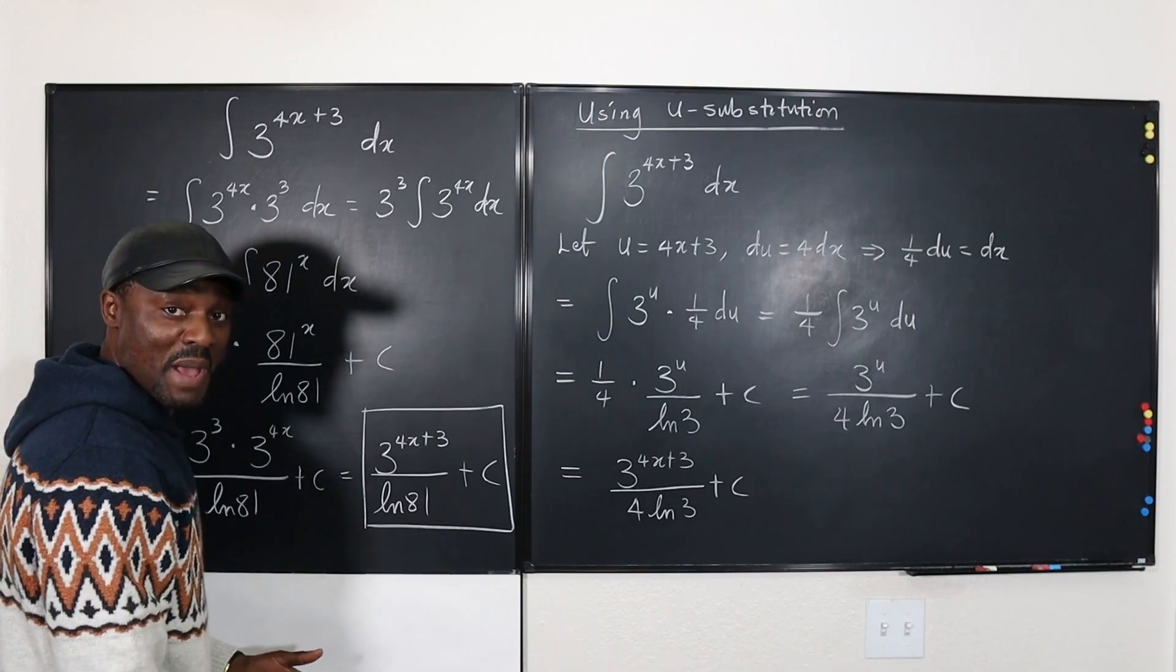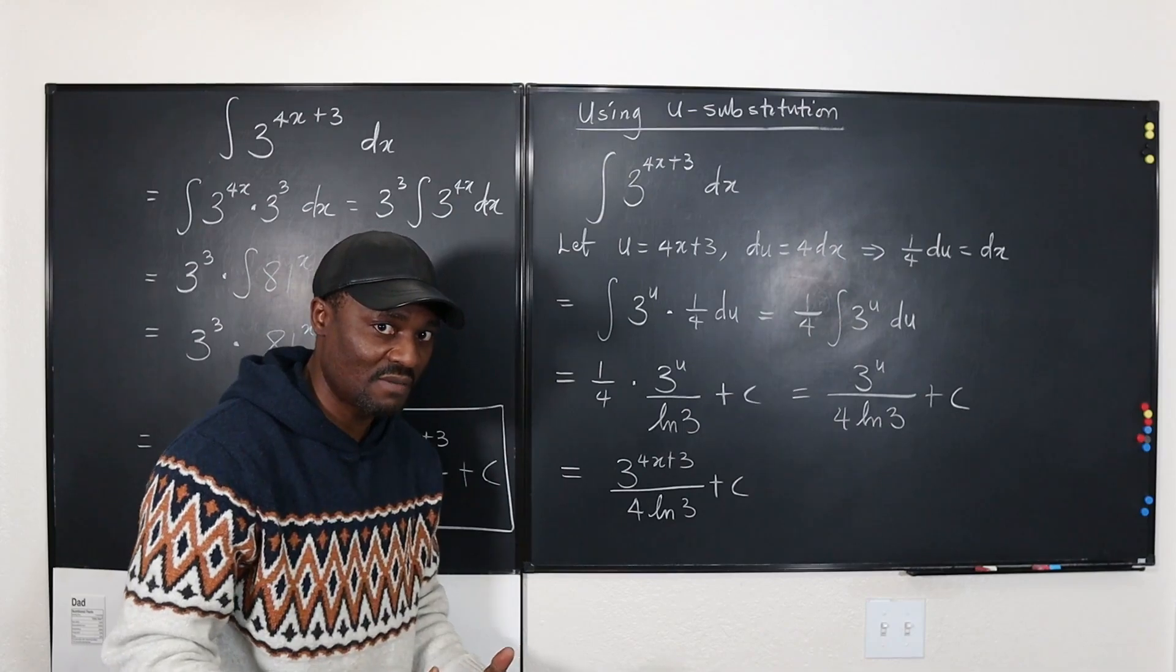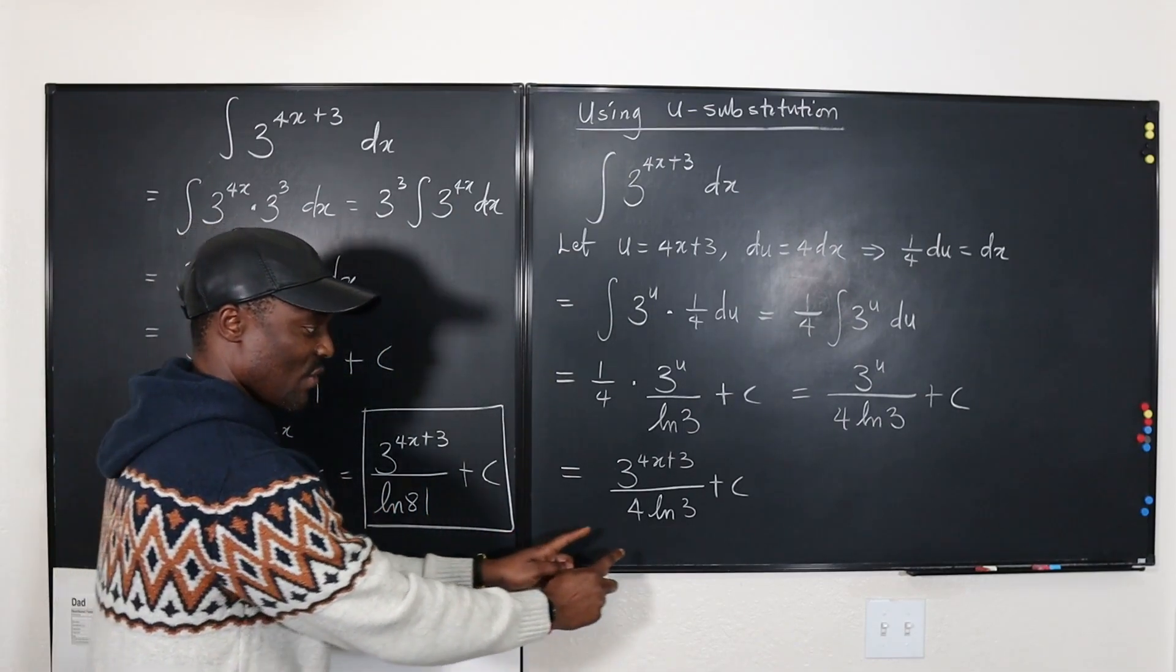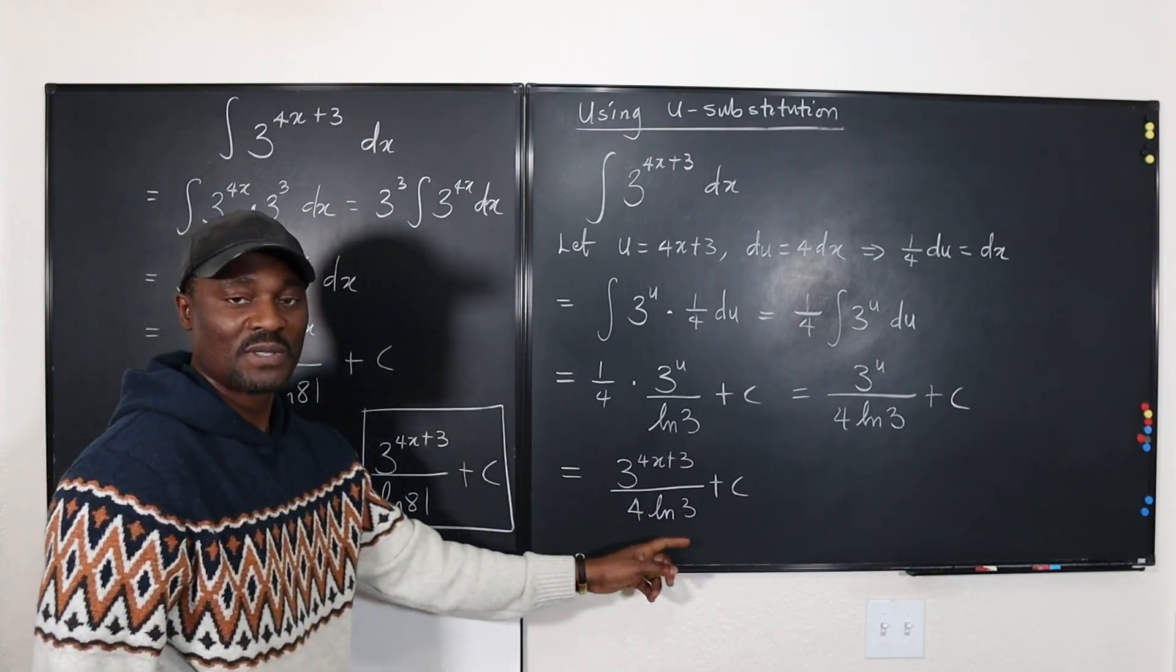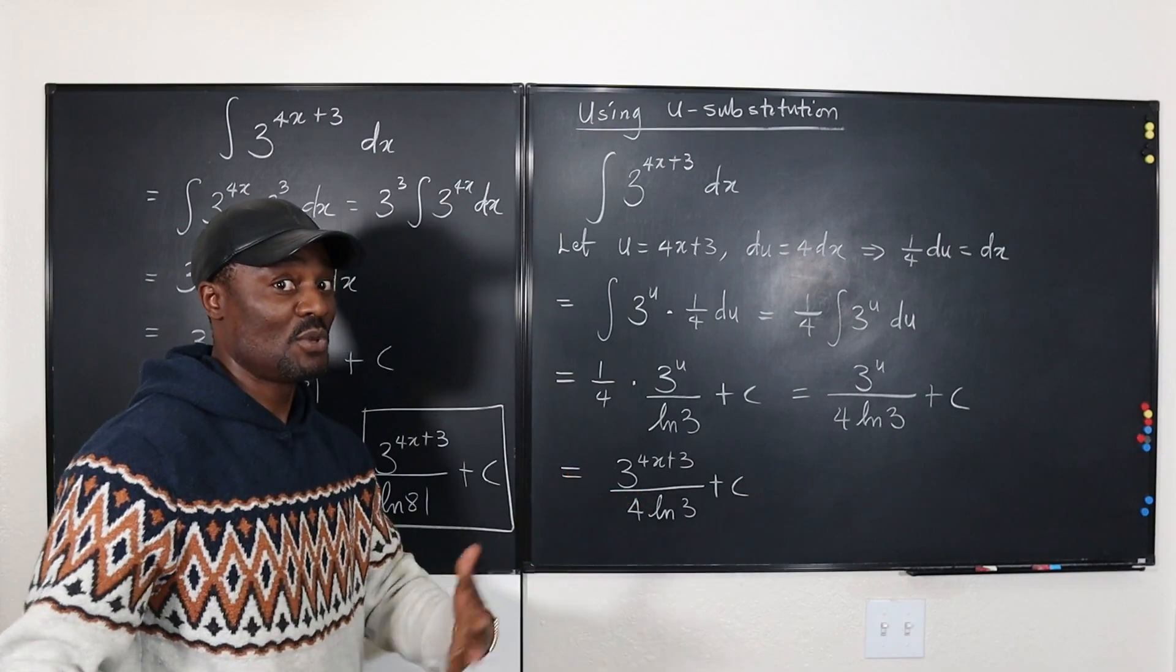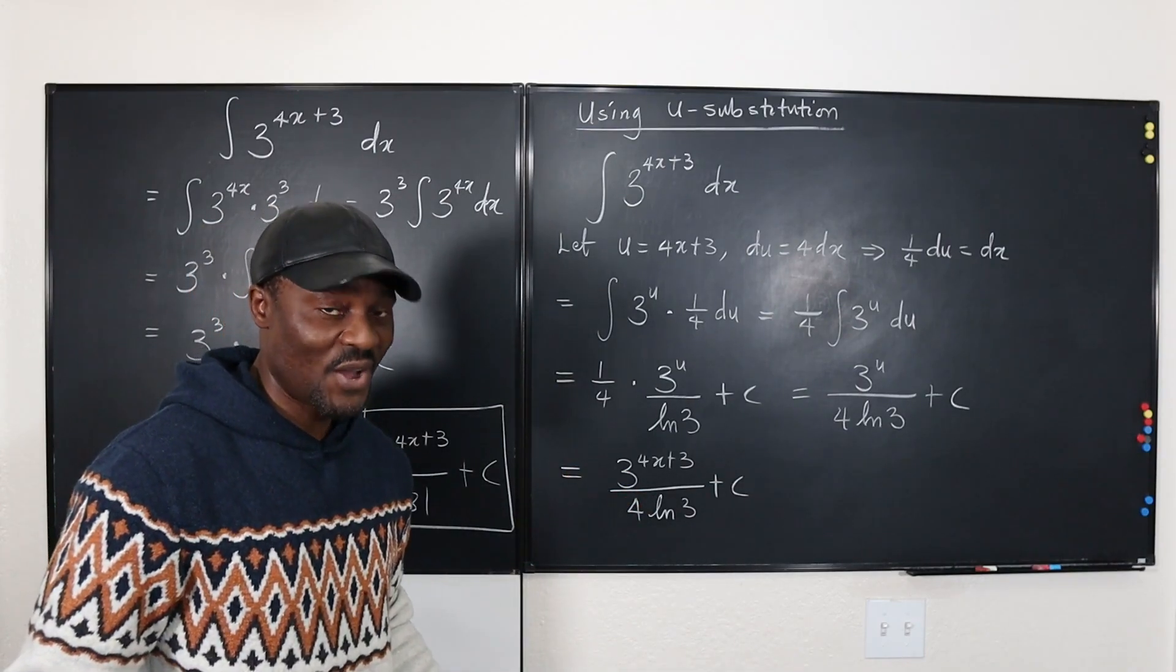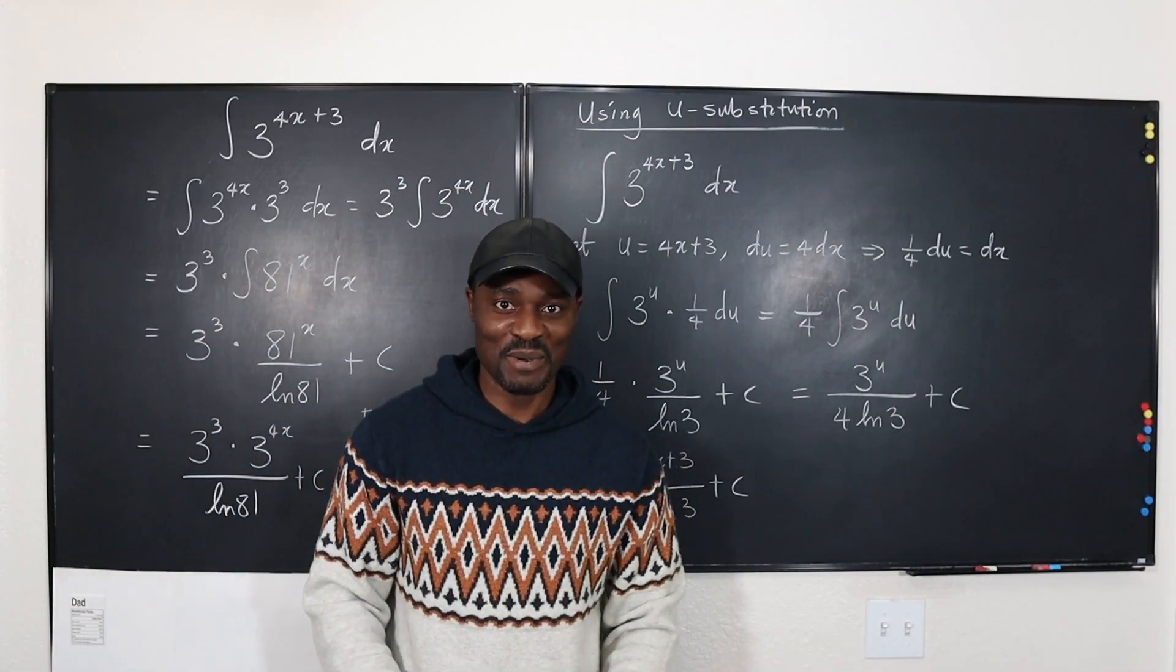Remember you can take this 4 and put it here. That's going to be 3 to the 4th which is the same thing as 81. So we can leave your answer this way. Natural log of 81 could be expressed as 4 times the natural log of 3 from your pre-calculus days or algebra 2. Don't stop learning because those who stopped learning have stopped living. Bye bye.